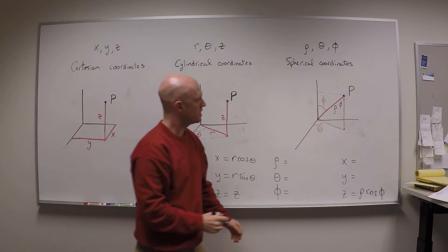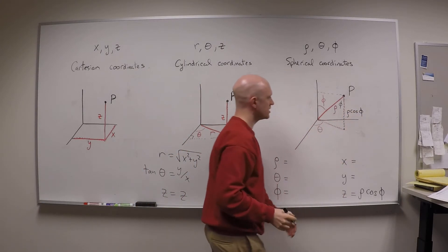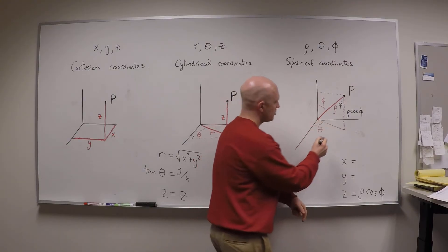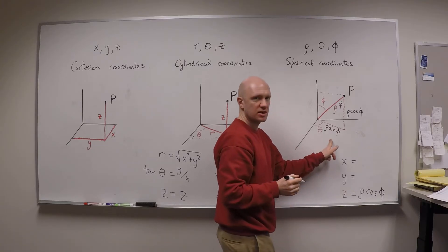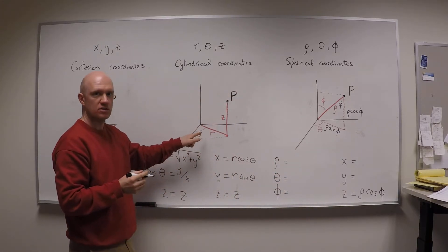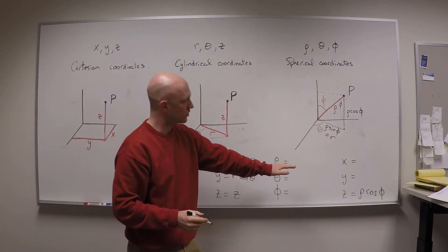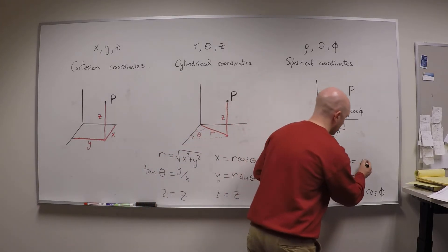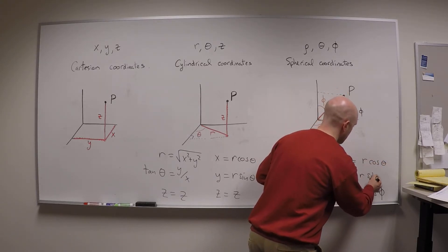Alright, so I have rho cos phi right here for my z height. And this guy right here is the opposite angle, so this one is rho sine phi. But that's the same thing as r in cylindrical coordinates. So let's just call that r. Now I know in cylindrical coordinates that x and y are r cos theta and r sine theta.